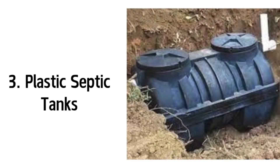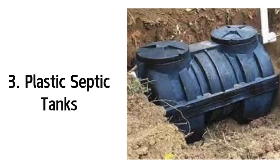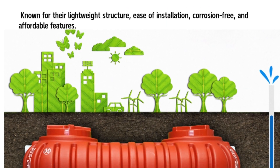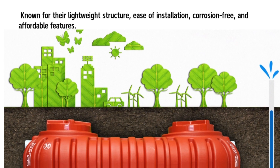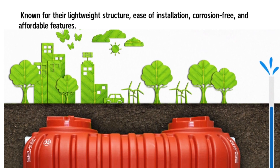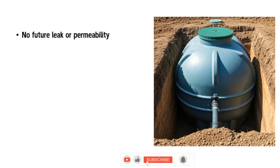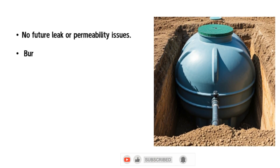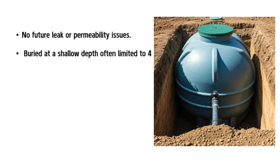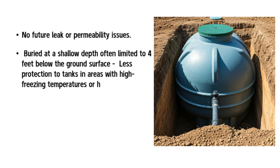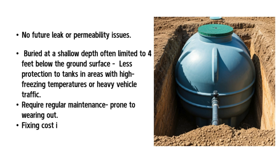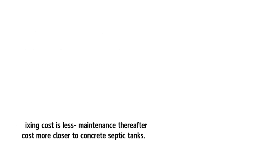3. Plastic Septic Tanks. Plastic septic tanks are the second most popular type after concrete. They are known for their lightweight structure, ease of installation, corrosion-free construction, and affordability. Unlike concrete or brick tanks, mortar or concrete is not needed to address leak or permeability issues. However, plastic septic tanks are typically buried at a shallow depth — often limited to four feet below the ground surface — which won't protect them in areas with high freezing temperatures or heavy vehicle traffic. They also require regular maintenance as they are prone to wearing out, and long-term maintenance costs can approach those of concrete tanks.